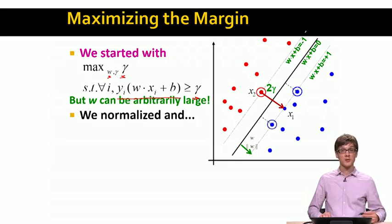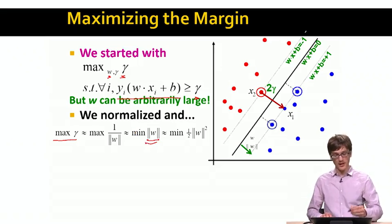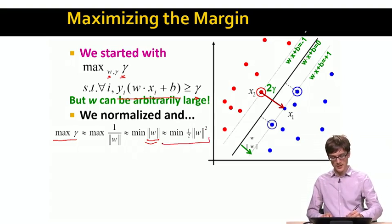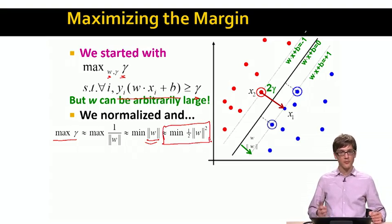So what we did then was we said, okay, let's normalize our margin by the length of w. So we said, maximizing the margin gamma is the same as maximizing 1 over the length of w, which is the same or equivalent to minimizing the length of w. Which is the same as minimizing 1 half times the length of w squared. And just for some technical reasons, at the end, our goal will be to minimize 1 half the length of w squared.